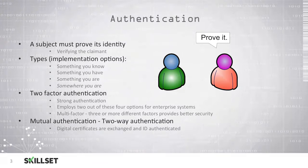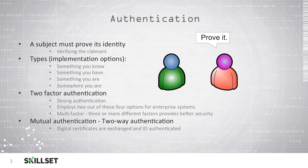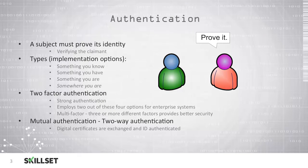For example, something that a user knows, something that a user has, and something that a user is — such as a password, a token, and perhaps a fingerprint. When we talk about mutual authentication, this is two-way authentication where the user authenticates to a server and the server authenticates back to the user. This is typically done with digital certificates to verify identity, ensuring that both the user and the server trust each other and can exchange information safely and securely.